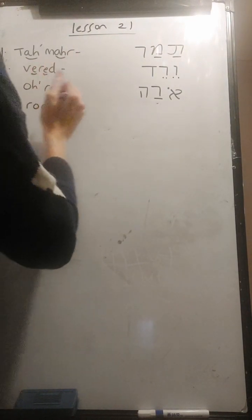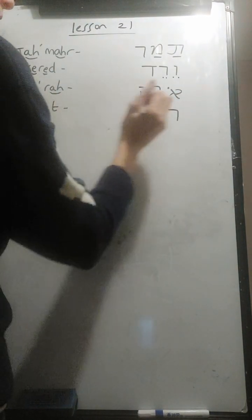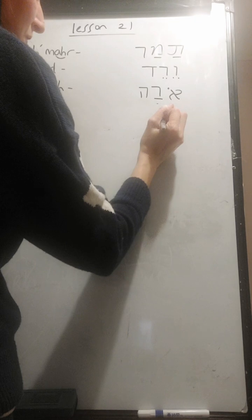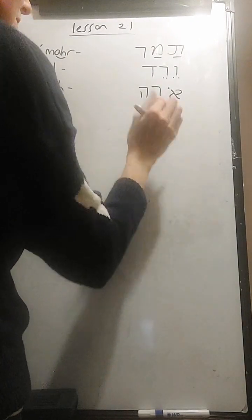And then root, R. We need the resh to start. The U vowel. We've only learned one so far. So it's the vav with the dot in center. And T at the end. So we'd use a tav. Root.